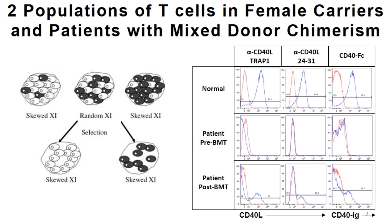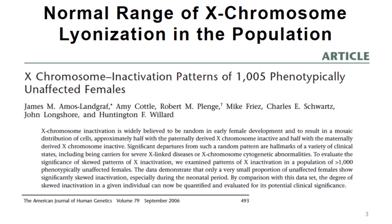In a patient who lacks CD40 ligand, you don't see really any expression — the two peaks overlap. In fact, in this case the stimulated T is lower than the unstimulated T, which is not typical of what happens. But then of course in a female carrier — or in this case, this is a patient who had a bone marrow transplant and was a mixed chimera that way.